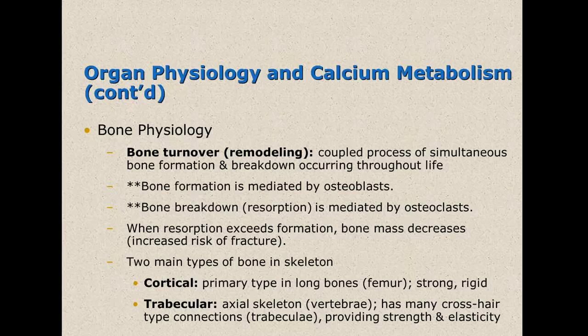We do have two types of bones in the skeleton: cortical and trabecular bones. Cortical bones are usually found in the femurs, and trabecular bones are found in the vertebrae and other types of connections.